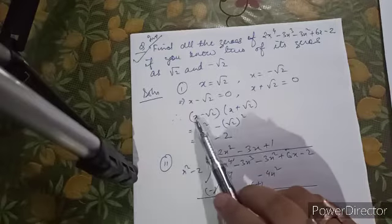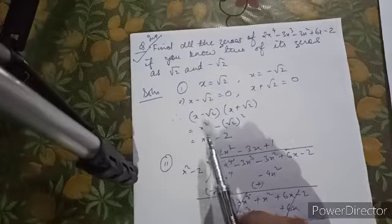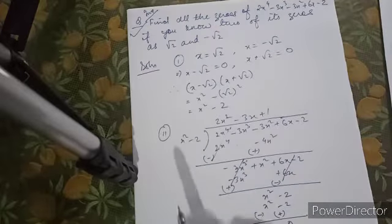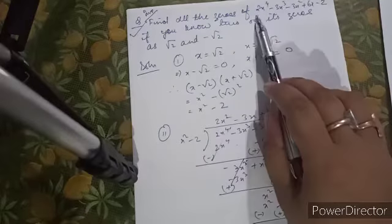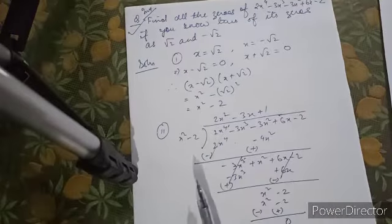Using (a - b)(a + b) = a² - b², we get x² - 2, and this will be your divisor. The given polynomial function will be your dividend. Then you apply the division algorithm method.